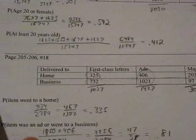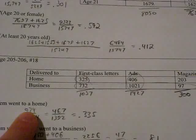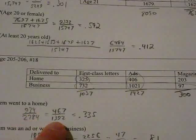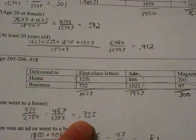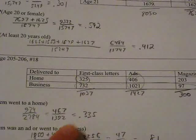Alright, here we go. How about the item going to a home? Well that was nice since we added up the first row. This is 934 over 2,784, reducible to 467 over 1,392 or 33.5% or 0.335.